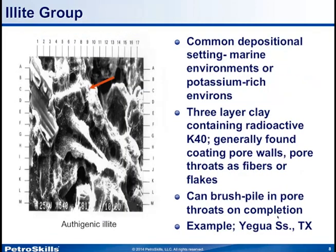In the illite group, the common depositional setting is marine — nearshore to offshore marine — and potassium-rich environments such as unusual interior drainage basins of New Mexico and East Africa. It's a three-layer clay containing radioactive potassium-40. Not all potassium is radioactive, but there is a natural ionic fraction present. Illite is generally found coating pore walls or pore throats, occurring as fibers or flakes, which can brush-pile in pore throats on completion. This example is taken from the Yowah sandstone in Texas.